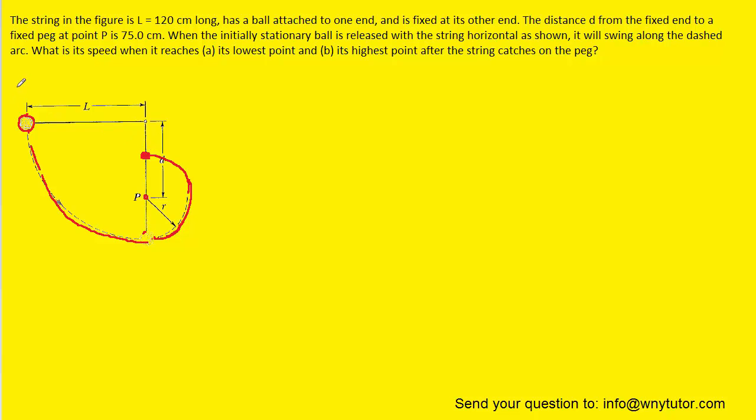We're going to call this point over here the initial, and when the string wraps around the peg and the ball travels up here, we'll call that the final point. We can use energy conservation once again. Initially, the only energy present is gravitational potential energy, mass times g times the length of the string, and we set that equal to the energy that's present at the final point.